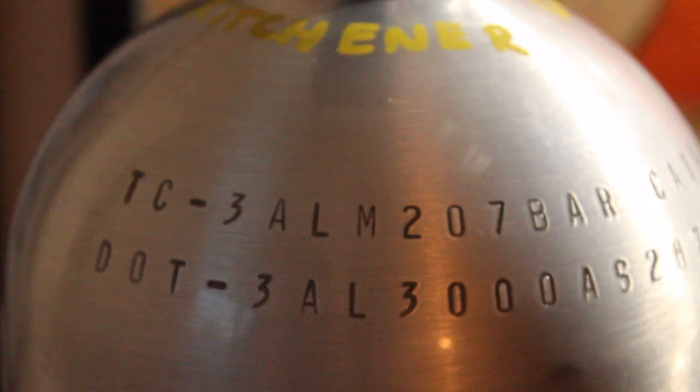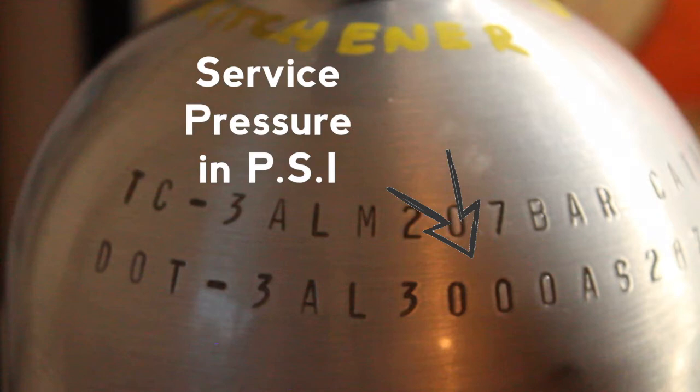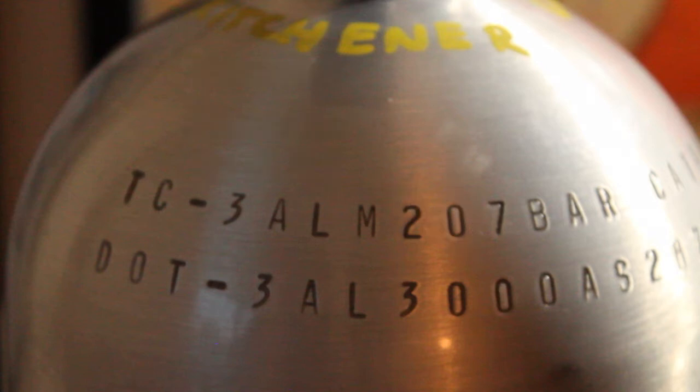Then beside that, we have a number, we have 3000. And this indicates that the service pressure of this cylinder is 3000 psi. So if you're into psi, you've got 3000, you're into bar, you've got the 207 bar above that.